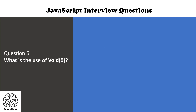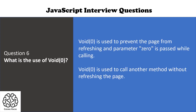Question number six is: what is the use of void(0)? void(0) is used to prevent the page from refreshing, and the parameter zero is passed while calling. It is also used to call another method without refreshing the page.